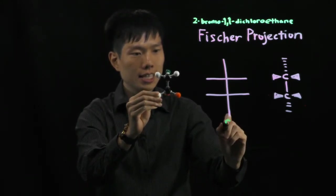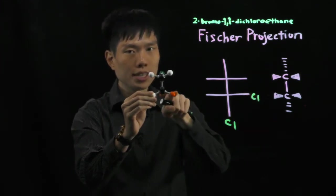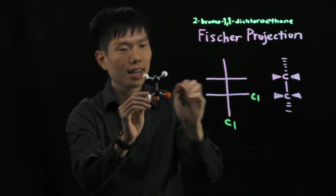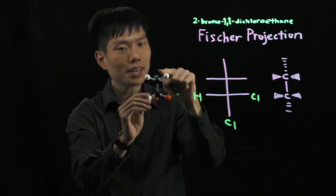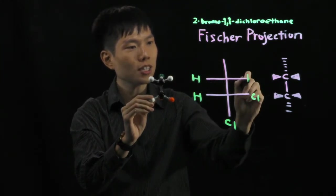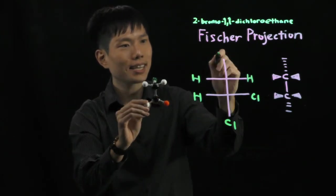It would be Cl here. And by the side, we have a chlorine pointing to the side but towards you. On the left, hydrogen. For the top here, hydrogen. The other side, hydrogen. And for the top, you see, the bromine tilted back here.